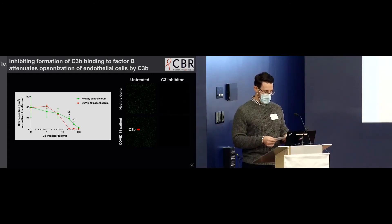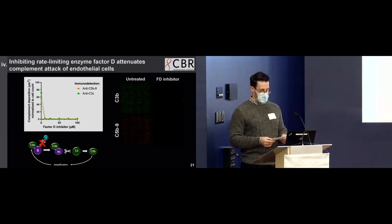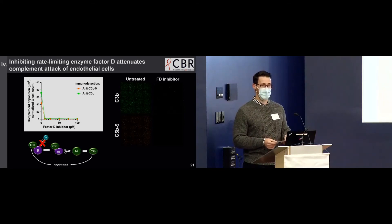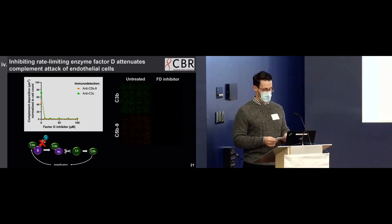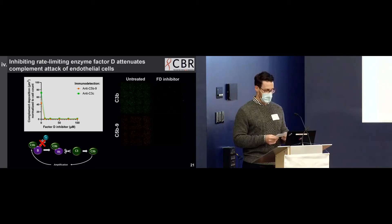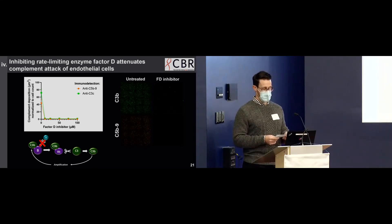A similar inhibitory effect can be seen in experiments probing for C5B9. Some patients have elevated factor D — the rate-limiting enzyme of complement amplification — which could be potentiating greater activation. If we target the amplification loop by blocking factor D, we can obliterate both C3B and C5B9 deposition onto endothelial cells. In the top right panel, there's a small amount of detectable C3B being deposited, but it does not amplify into the massive patches seen in the top left image, and this has the downstream effect of inhibiting C5B9 formation.